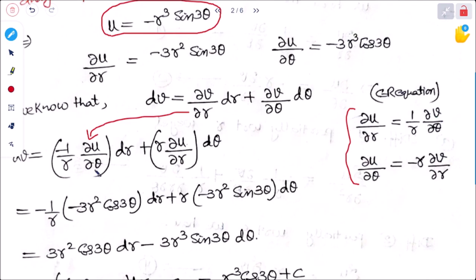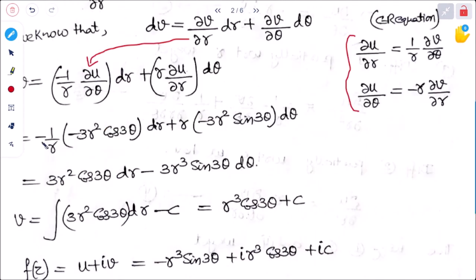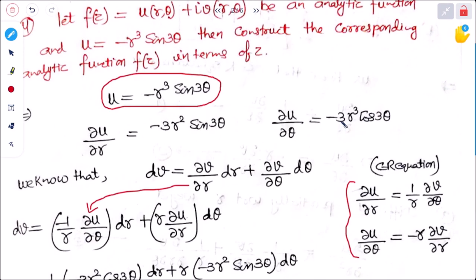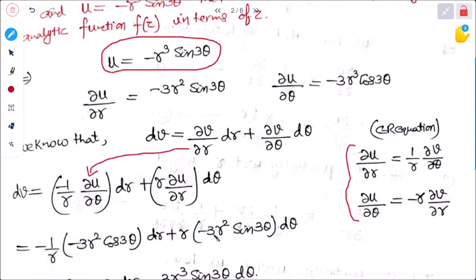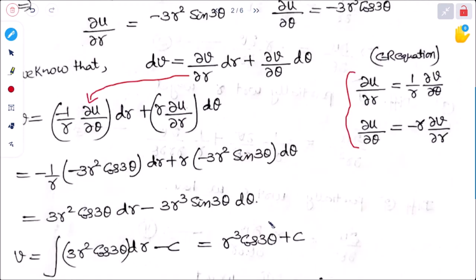Substituting: ∂v/∂r = minus(1/r)(minus 3r³ cos3θ) = 3r² cos3θ. And ∂v/∂θ = r times (minus 3r² sin3θ) = minus 3r³ sin3θ. So dv = 3r² cos3θ dr minus 3r³ sin3θ dθ.